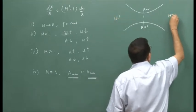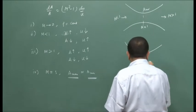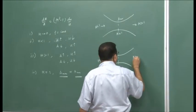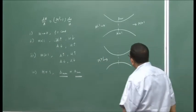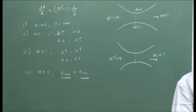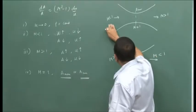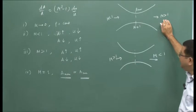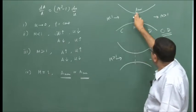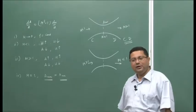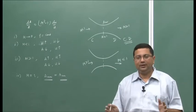We have shown in the last class that for taking a subsonic flow and converting it to a supersonic flow, we need to have a converging-diverging area with the minimum area at the throat where Mach number is equal to 1. We have also shown that if you have a supersonic flow and want to slow it down to a subsonic flow, then also we need to go through a converging-diverging area. We have proved that in order to get a supersonic nozzle, we need a converging-diverging nozzle.